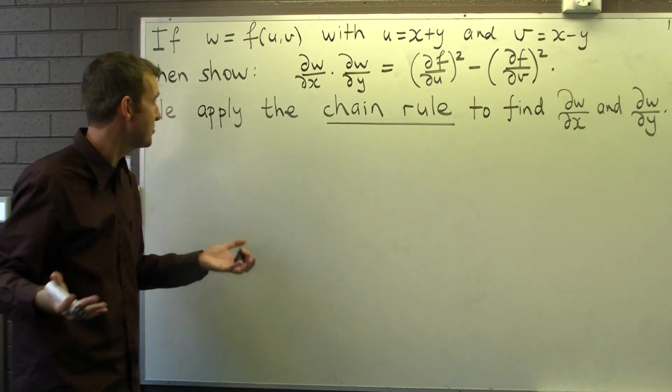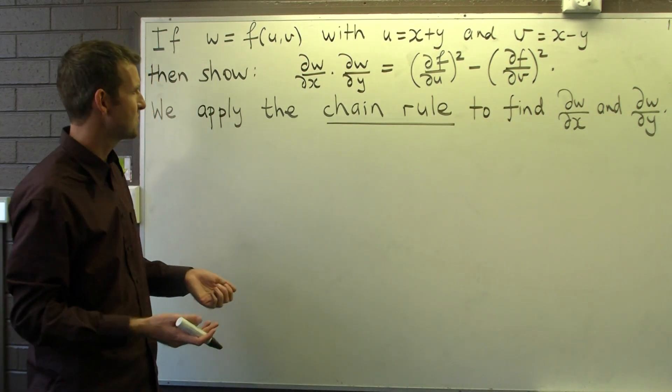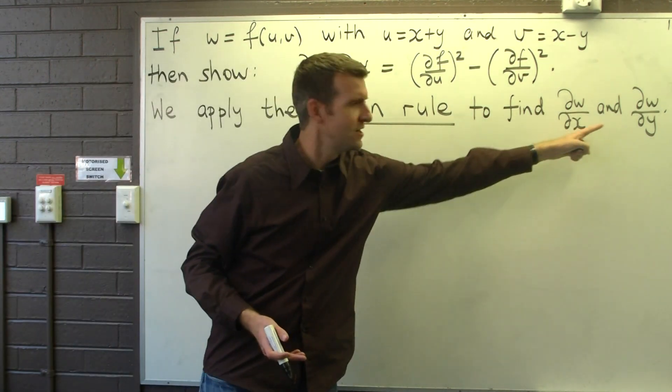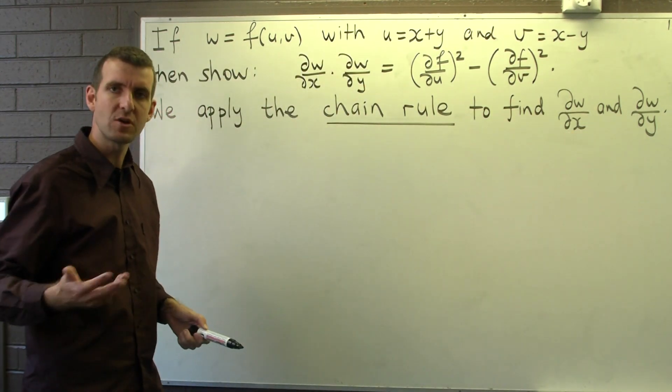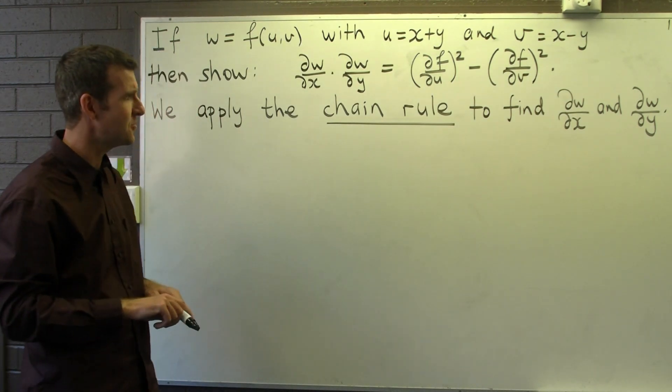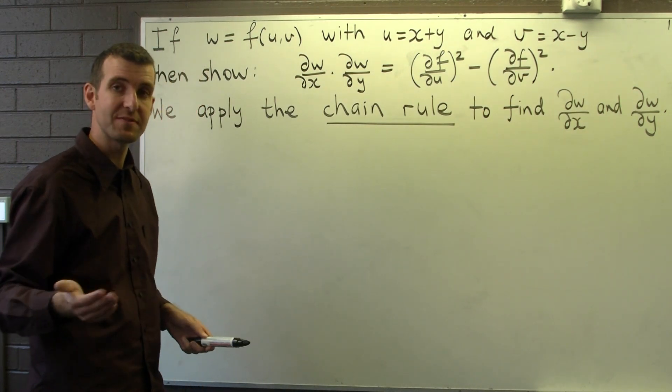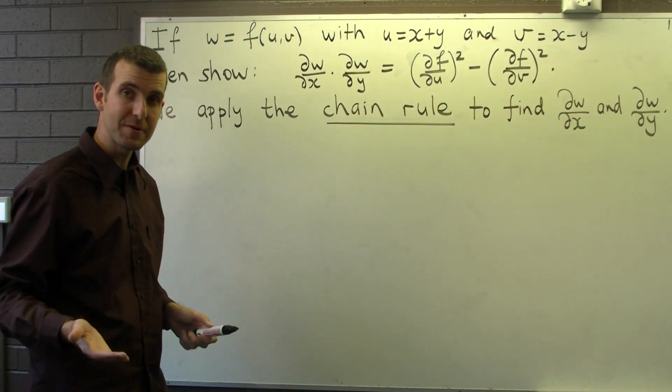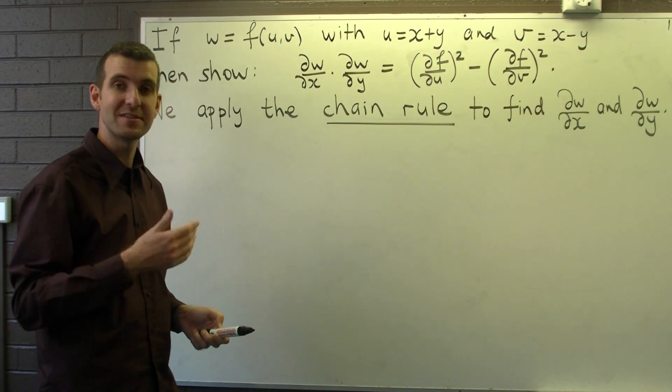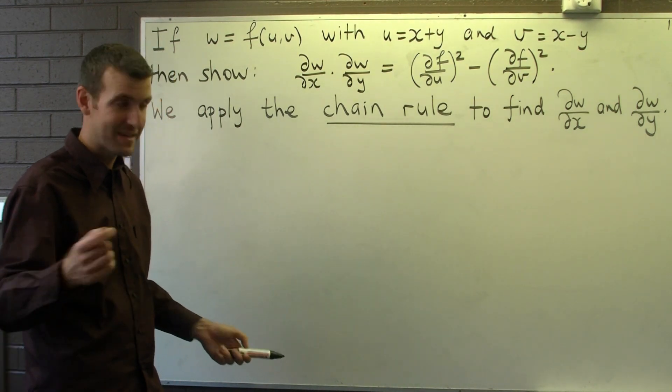Okay, so how do we apply the chain rule, and in particular which chain rule will give us these kinds of partial derivatives? Well, sometimes this is confusing. The application is not very difficult, but because there are so many different chain rules we have to be very careful. In my experience, the easiest way to determine the correct chain rule is to draw a diagram, and here's how we do it.